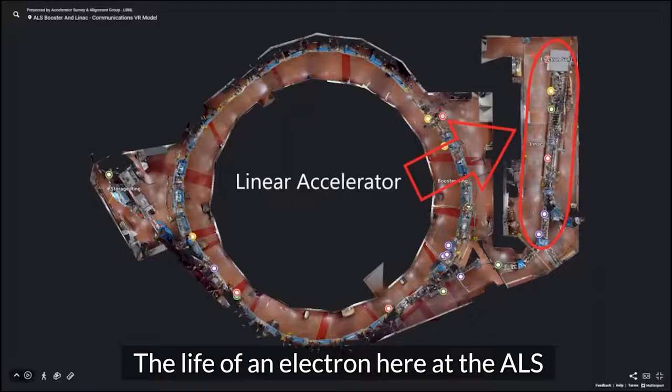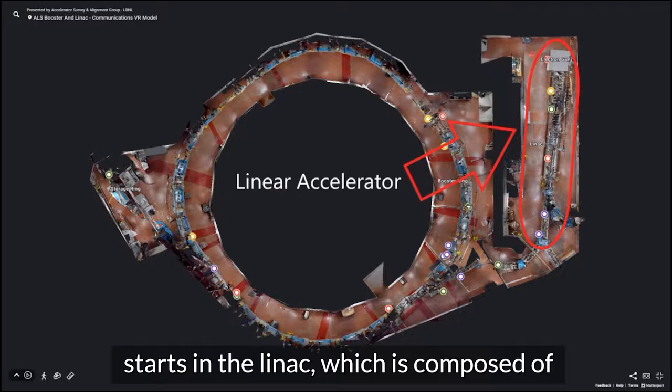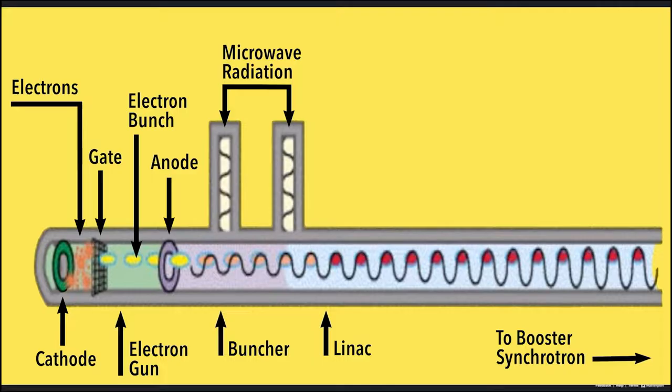The life of an electron here at the ALS starts in the LINAC, which is composed of three major parts: the electron gun, the buncher, and the linear accelerator.